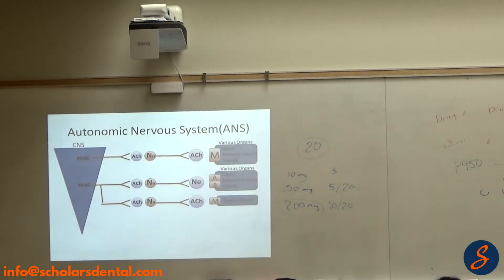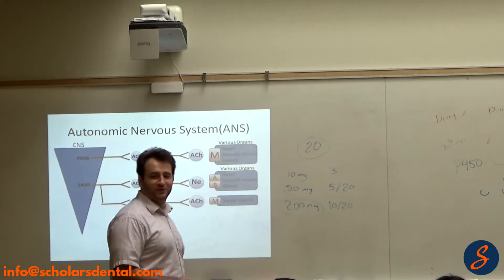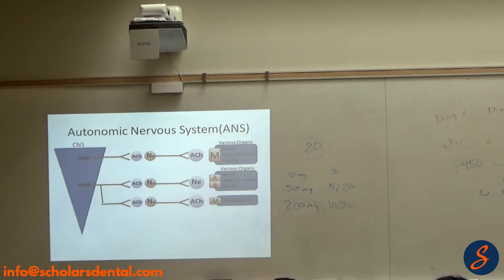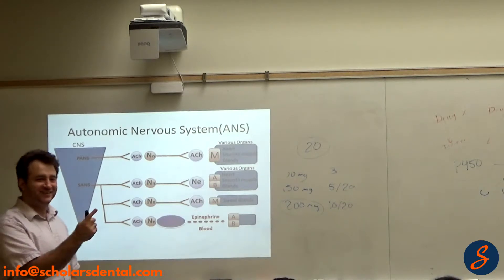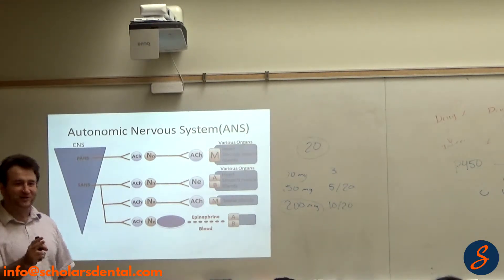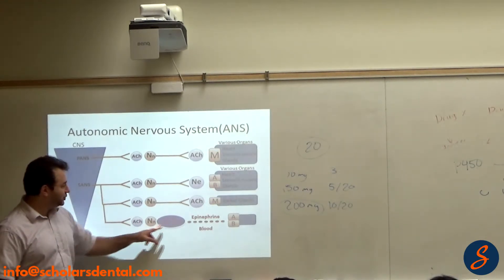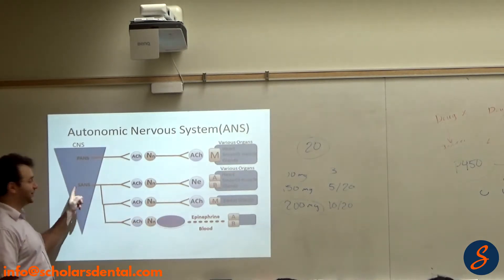We said the sympathetic—which endocrine gland is attached directly or controlled directly by the nervous system? Adrenal gland. Which part of the adrenal gland? Medulla. The adrenal medulla is actually controlled by the sympathetic.